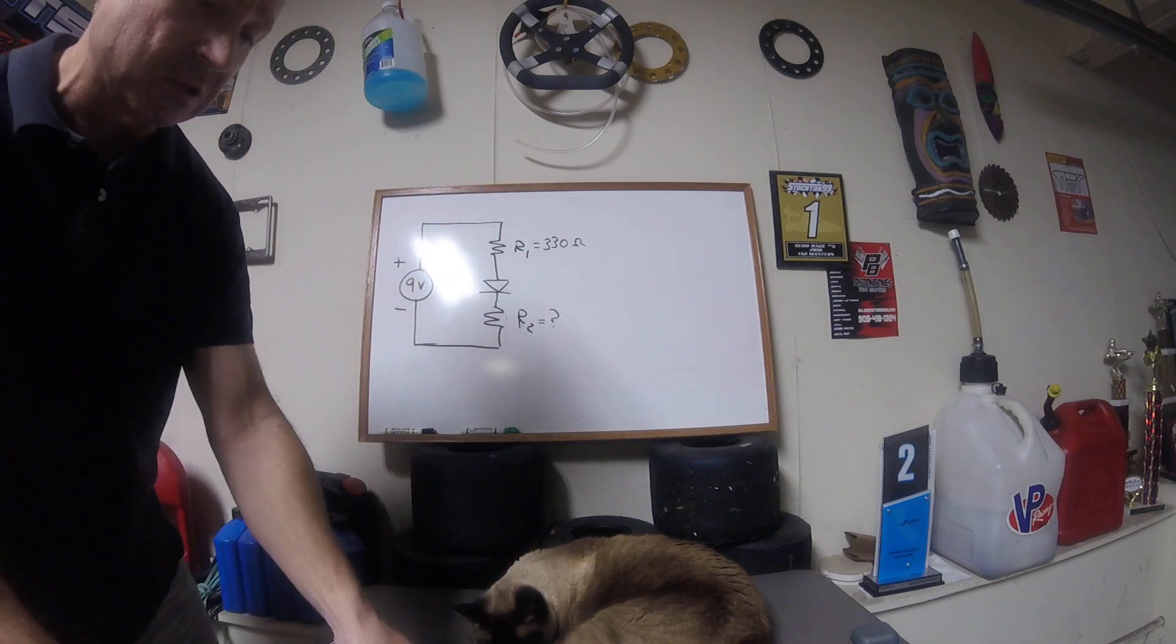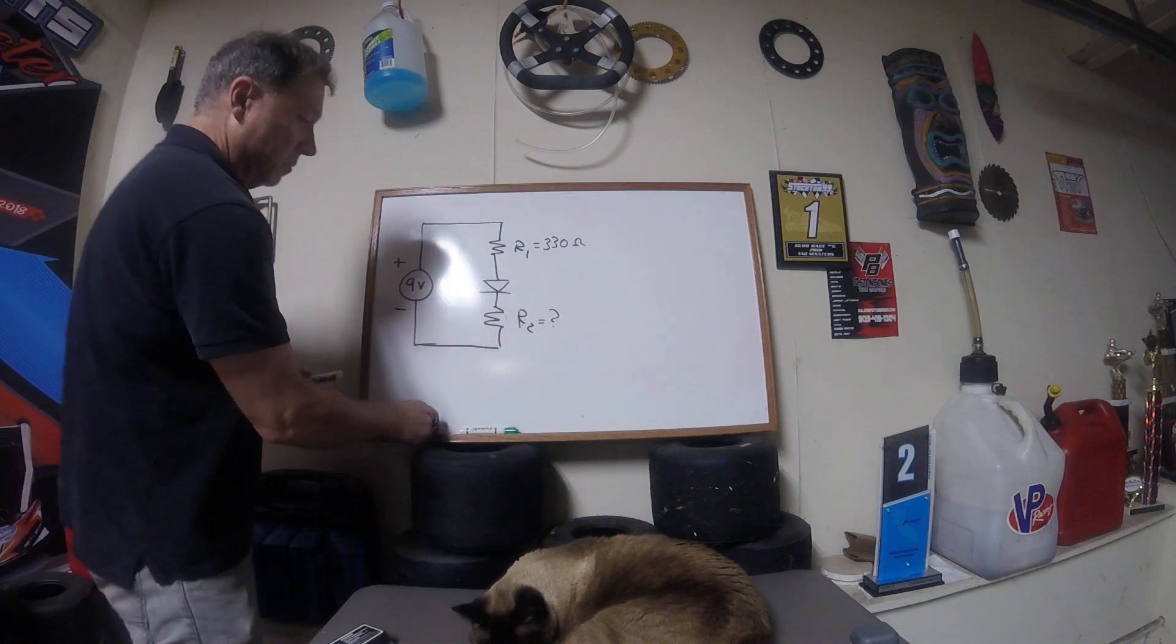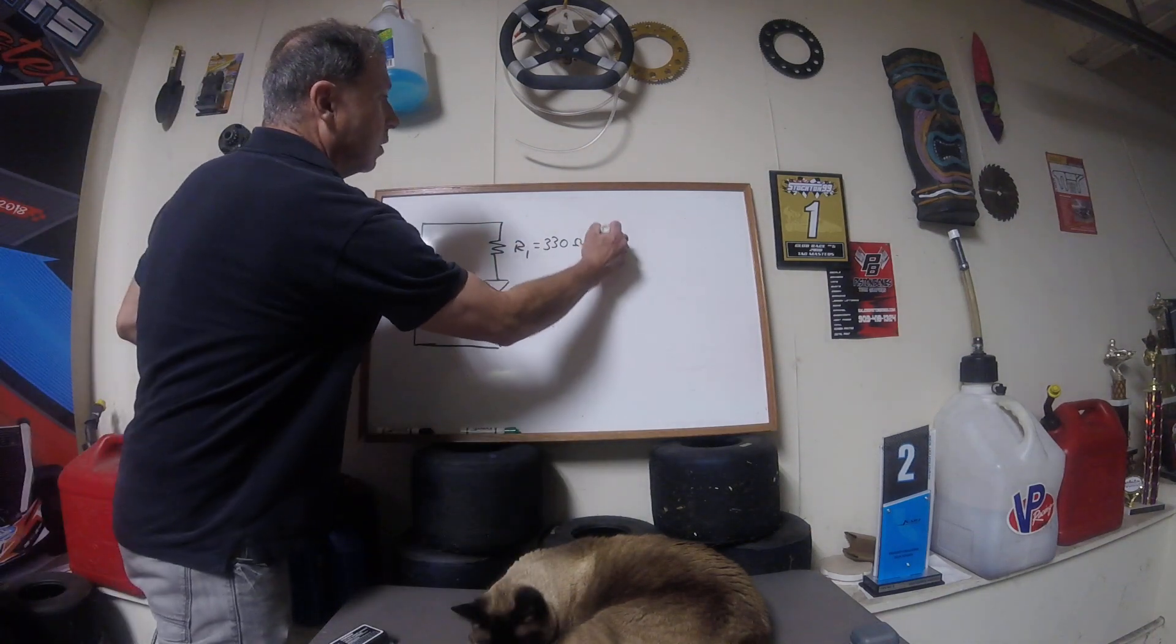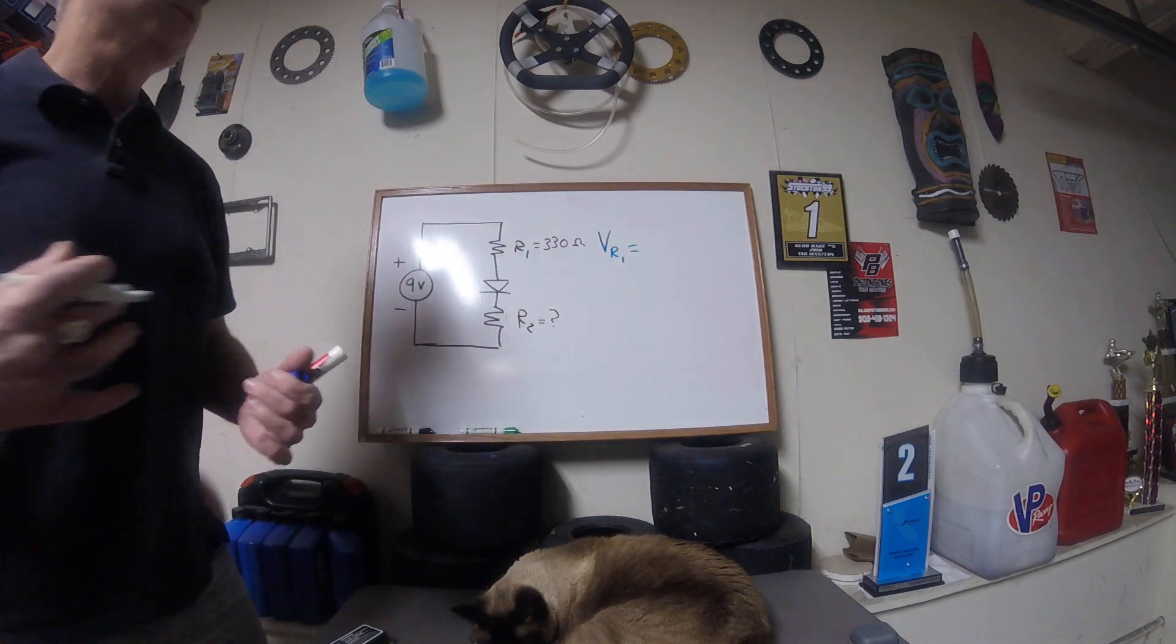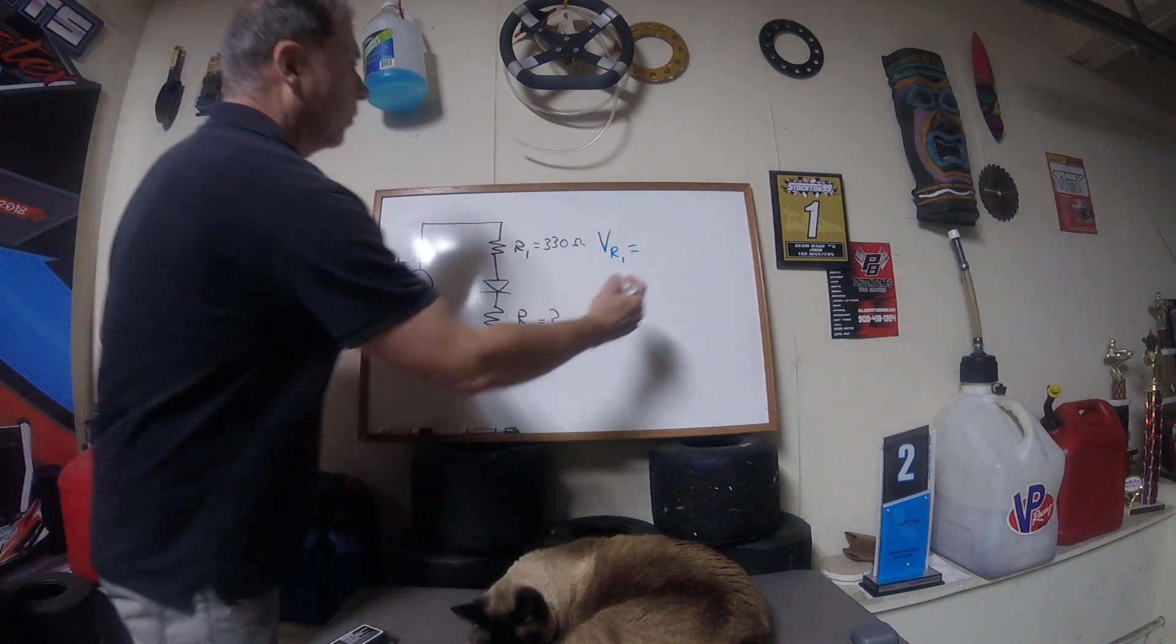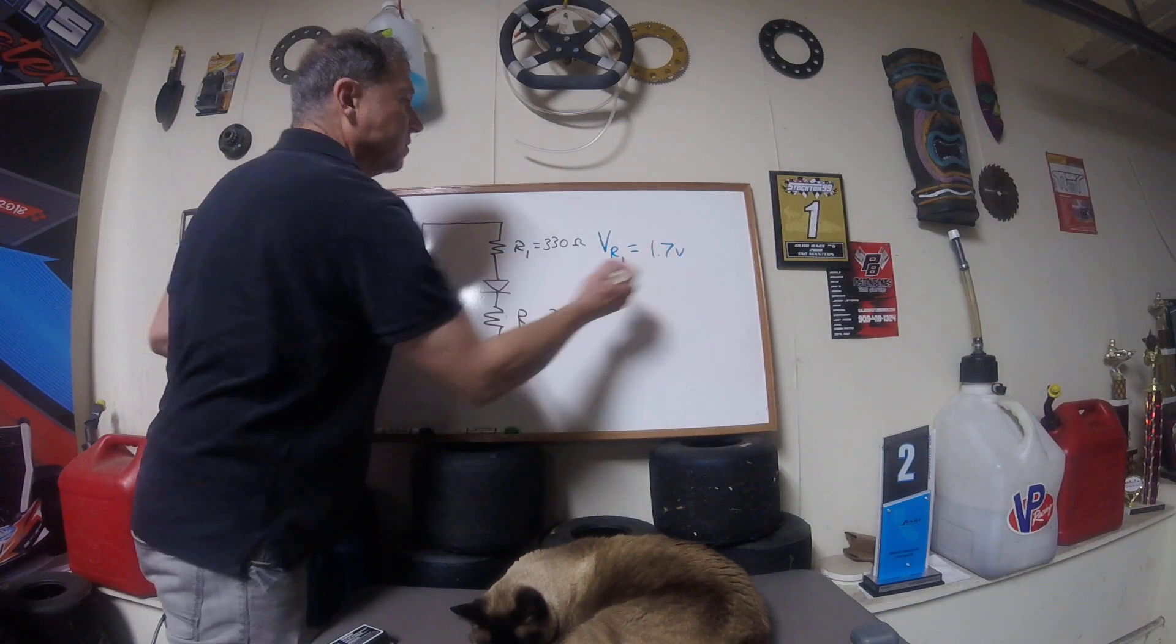And in this case, let's just say that the voltage across R1, that we measured it, and we came up with, oh, let's say 1.7 volts DC.